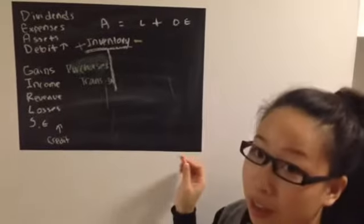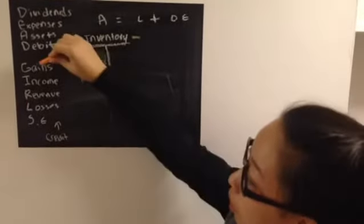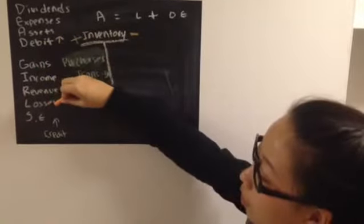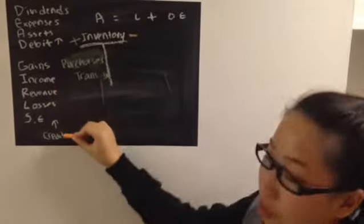Another acronym that I made up is called GIRLS, which is gains, income, revenue, losses, and stockholders' equity increase with credit.